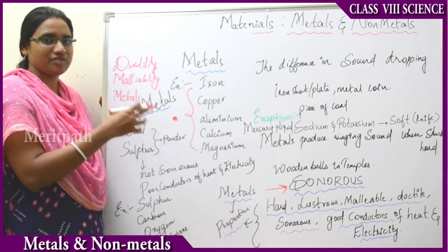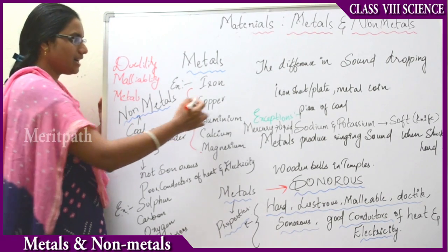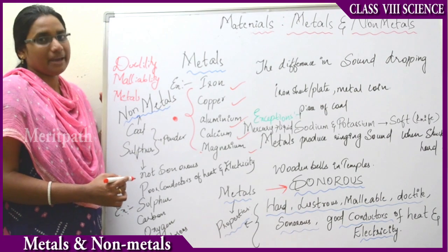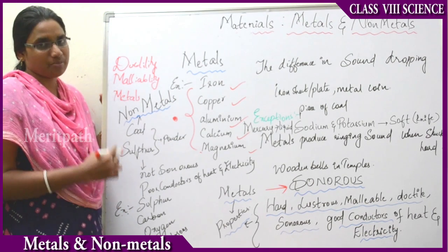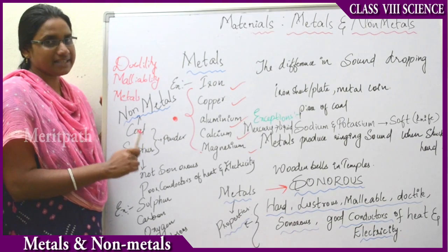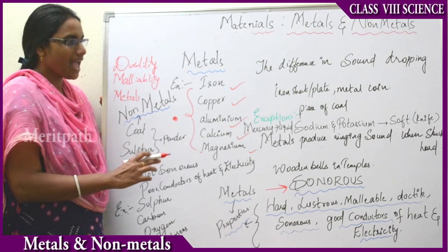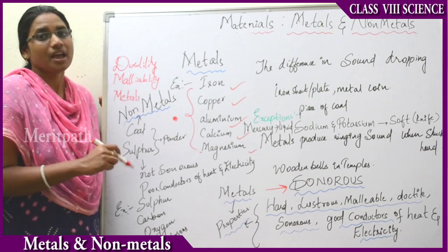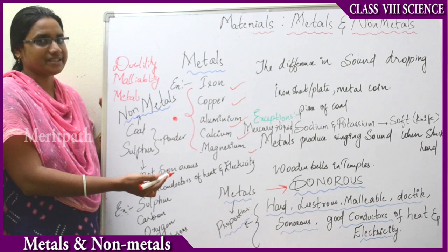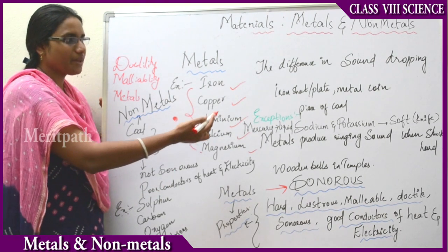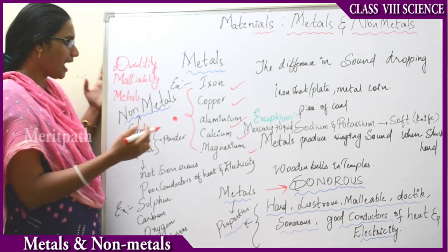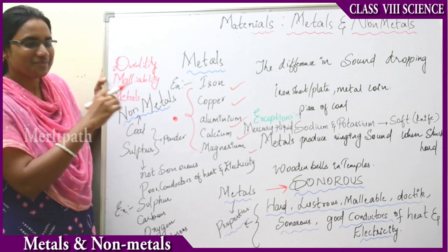These are the physical properties which we can touch and feel. Good examples of metals follow all these properties. Some exceptions: mercury is only in liquid state at room temperature, while other metals are in solid form. Another exception is sodium and potassium — they are very soft and can be cut with a knife, which is contrary to the general hardness of metals. These two are the exceptions — please make note.